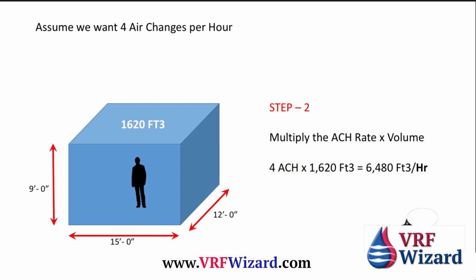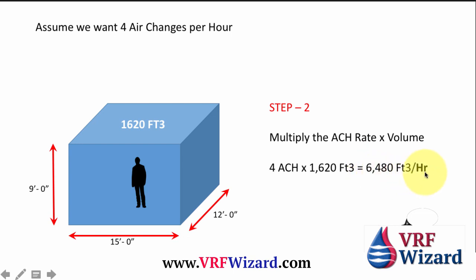Take your four air changes and multiply by the cubic feet of the room to get the total cubic feet of air that we need to remove in the hour. Four air changes per hour is equivalent to 6480 cubic feet for this room volume — that's four times the volume.